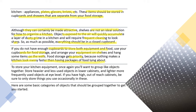To store your kitchen equipment, you want to group like objects together. Store heavier and less used objects in lower cabinets and lighter, more frequently used objects at eye level. If you have high out-of-reach cabinets, be sure to only store things you use occasionally in these. Here are some basic categories of objects that should be grouped together to get you started.